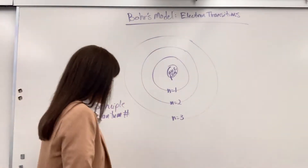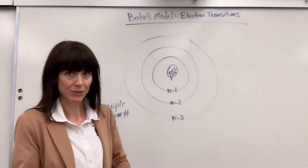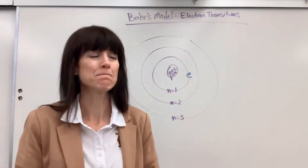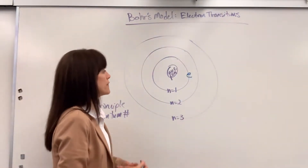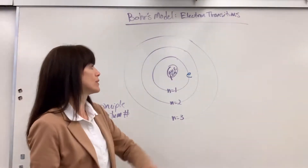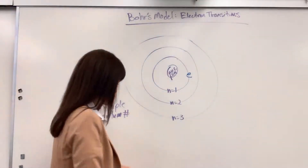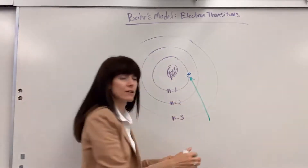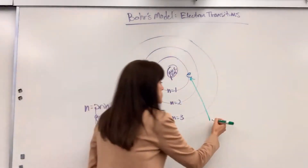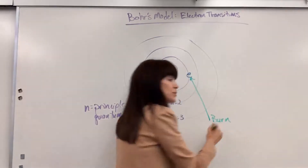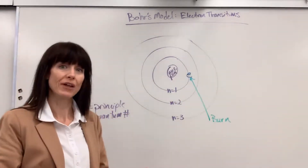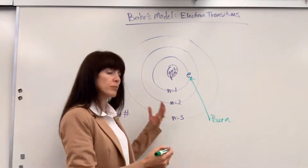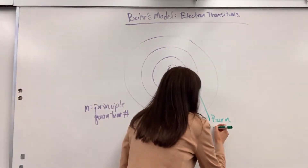We are going to take an electron in the first energy level — as if we have hydrogen. This electron, we are going to put energy into it. Now, we could put energy into the atom a couple of ways. We could burn it, and in your class you'll probably do a flame test where you burn different salts and they change colors — this will explain it. You can burn it, or you could add electricity.